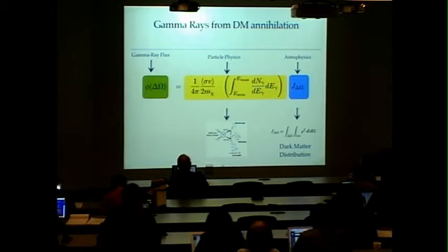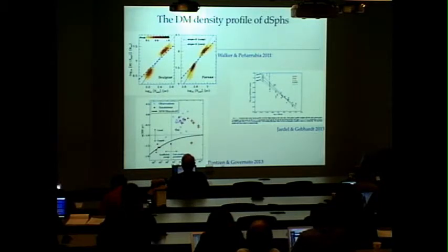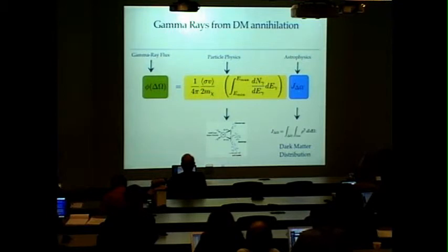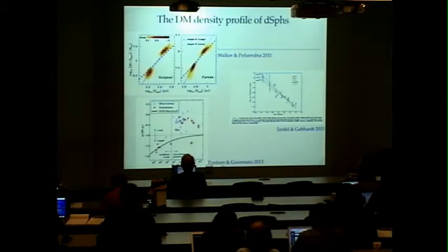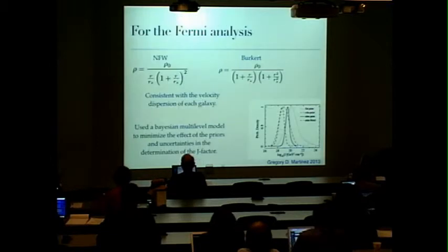So let me review first what the Fermi constraints are now and then I will give you the constraints with the black holes. So for the Fermi analysis, given this astrophysical factor it is important what is the density profile on these dwarf galaxies and as we have been hearing along the morning it can be core or cusp and now we cannot say precisely which one of it is. But for the Fermi analysis they accounted for this uncertainty by considering two different profiles.